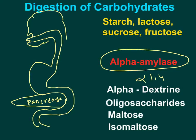Starch is the major polysaccharide we take in our diet. Glycogen is another polysaccharide found in animal-derived food, but it is present in such low quantity in meat that we don't really mention it. Both starch and glycogen are branched polysaccharides with an alpha 1,4 linked amylose component and an alpha 1,6 linked amylopectin component.